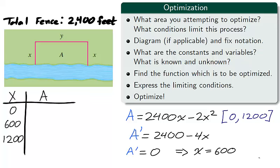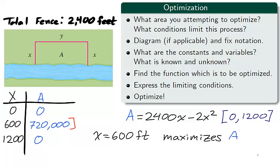The final step of the closed interval method is taking the critical number we found, x equals 600, and the two endpoints, 0 and 1200, and finding which one has the maximum value. When we evaluate A at the values 0, 600, and 1200, A becomes 0, 720,000, and 0. Therefore, we found the absolute maximum value of A. It happens when x is equal to 600 feet.